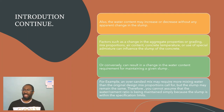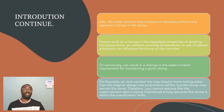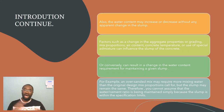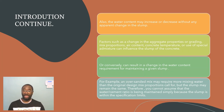The water content may increase or decrease without any apparent change in the slump. You can decrease or increase the amount of water in your concrete mix design and yet still your slump remains the same. Factors such as aggregate properties or grading of the aggregate, the mix proportion, the air content, the concrete temperature, or use of special admixtures can influence the slump and can also result in a change in water content requirement for maintaining a given slump.